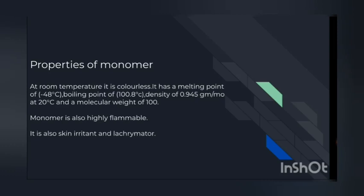Properties of monomer: at room temperature it is colorless. It has a melting point of minus 48 degrees centigrade, a boiling point of 100.8 degrees centigrade, and a density of 0.945 grams per ml at 20 degrees centigrade, with a molecular weight of 100. It is an organic solvent. Monomer is also highly inflammable and should not be used around an open flame. It should be kept in a dark colored bottle so that it is protected from ultraviolet rays which could polymerize it. It is also a skin irritant and lacrimator.